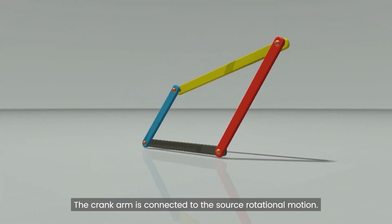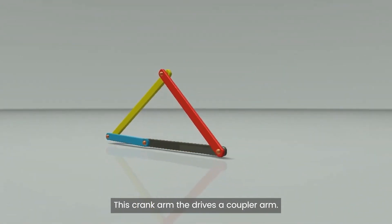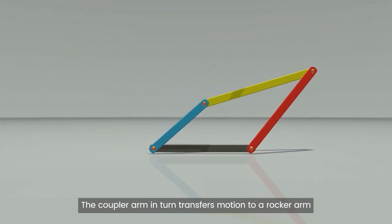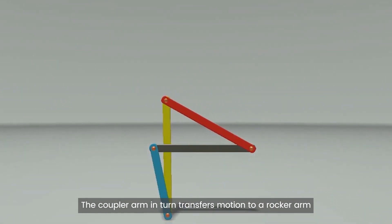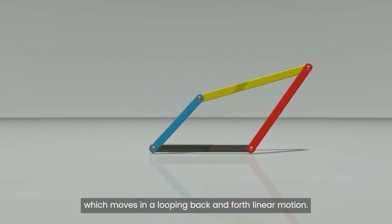The crank arm is connected to the source rotational motion. This crank arm then drives a coupler arm. The coupler arm in turn transfers motion to a rocker arm which moves in a looping back and forth linear motion.